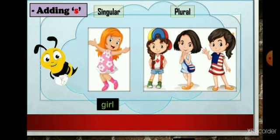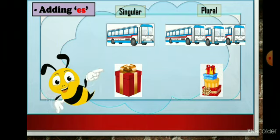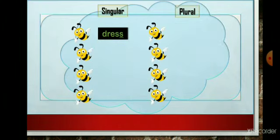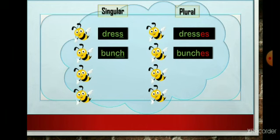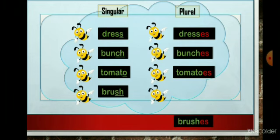Here, girl becomes girls. Plural means more than one. If a word ends in s, double s, x, ch, o or sh, we add s or es for its plural form. Bus becomes buses. Box becomes boxes. Dress becomes dresses. Bunch becomes bunches. Tomato becomes tomatoes. Brush becomes brushes.